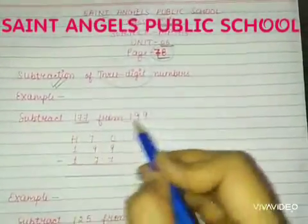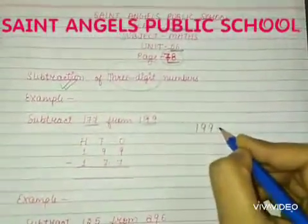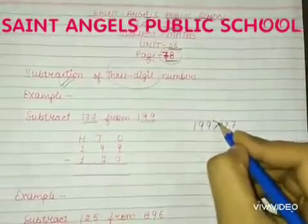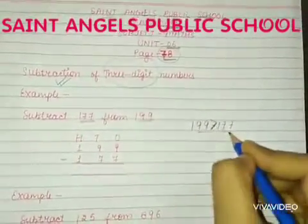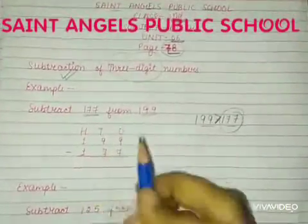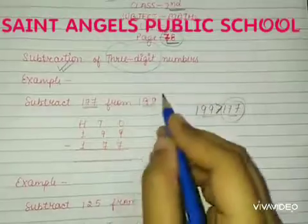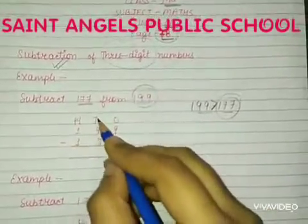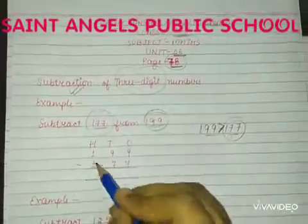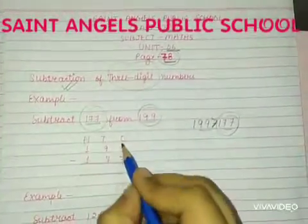Subtract 177 from 199. Arrange them in column. We know that we always subtract the smaller number from the bigger number, so write 177 under 199. In 199, 1 is hundreds, 9 is tens, 9 is ones. In 177, 1 is hundreds, 7 is tens, and 7 is ones.